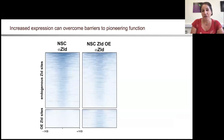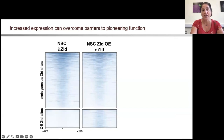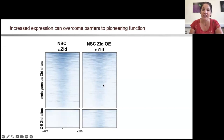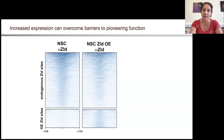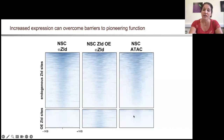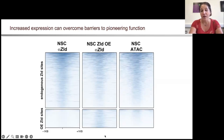We could now go back to our neural stem cell system and test this in vivo. When we looked at endogenous levels of Zelda binding, we could identify endogenous Zelda binding sites in the neural stem cells. But when we increased Zelda expression using transgenics, we could identify a number of new Zelda-bound regions. When we looked at what those regions looked like in terms of chromatin accessibility, these were primarily enriched for closed regions. So upon increased Zelda expression in neural stem cells, we could now increase Zelda binding to these closed inaccessible regions.